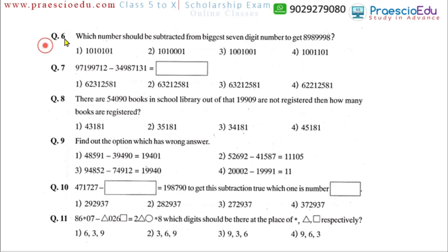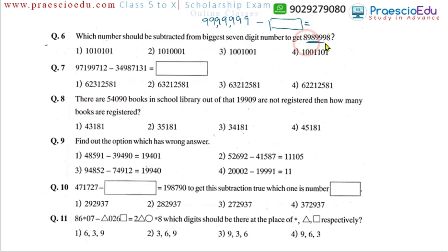Question number 6: which number should be subtracted from the biggest 7-digit number to get the given number? The biggest 7-digit number is 9,999,999, since the biggest digit is 9. We have to subtract the given number from 9,999,999 to get the unknown number. Carry out this subtraction and you will get option number 2 as the correct answer.